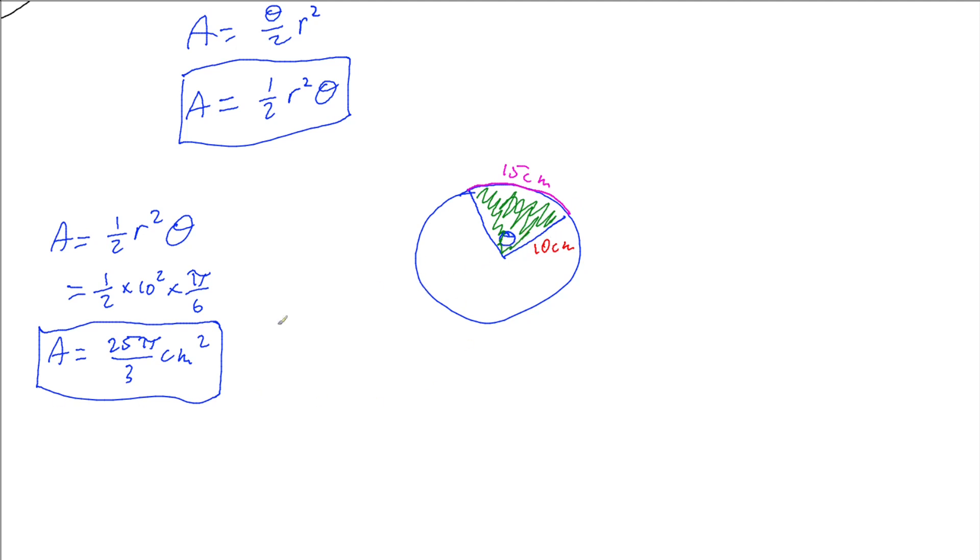Well we can use our arc length formula. We know the arc length is the radius times by the angle. And so the fact that we know our arc length is 15, our radius is 10, and we don't know our angle, we can have that our angle is 15 over 10 or 3 over 2 radians or 1 and a half radians. And so we now have our angle.